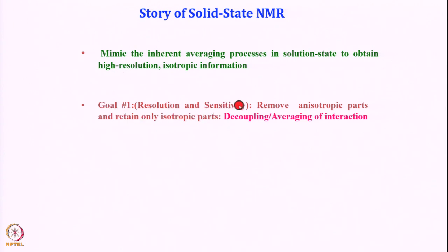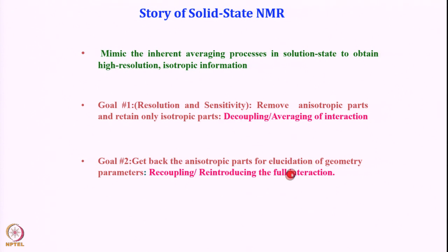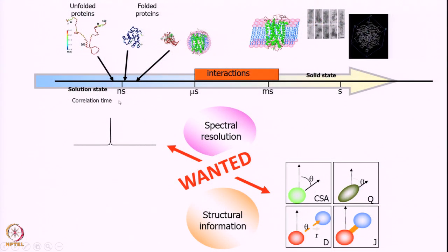How are we going to enhance the resolution and sensitivity? By removing the anisotropic part that is present in solids and retaining only the isotropic part. If you remove the anisotropic part and retain only the isotropic part by something called decoupling or averaging of interactions, then we can get a sharper line. But by doing this we are getting rid of important structural parameters, so we have to get back those anisotropic parts for elucidation of geometric parameters like dipolar coupling or chemical shift anisotropy.